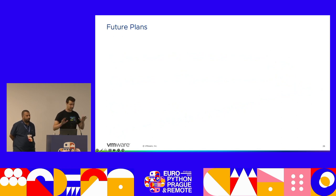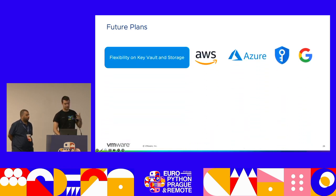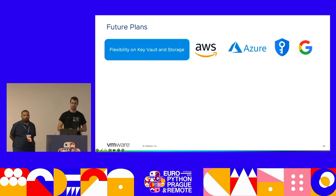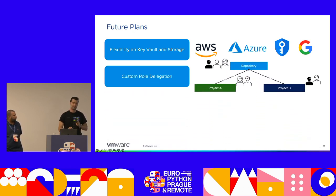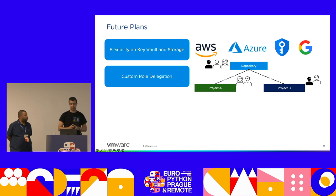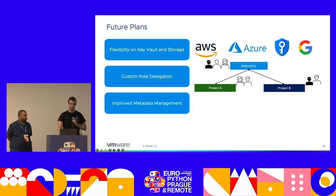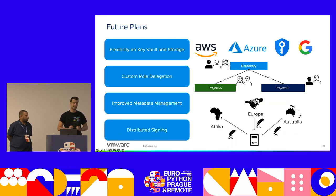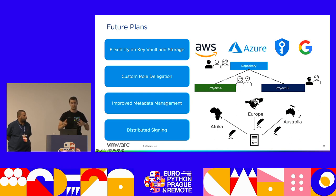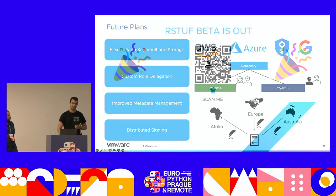Now we want to share our future plans. We want to be even more flexible by allowing more Key Vault and storage solutions — AWS Key Vault, Azure as a storage solution, Google Cloud, and so on. We are open for suggestions. We also want to allow custom role delegation, giving organizations better control over how they delegate trust. We want to improve metadata management. Finally, an exciting feature we are working on is distributed signing — really important for big international organizations. Currently if you have an important signing ceremony you need to do it in-house physically. We are working to enable it remotely, on multiple steps. RSTUF Beta is out and can be tried.